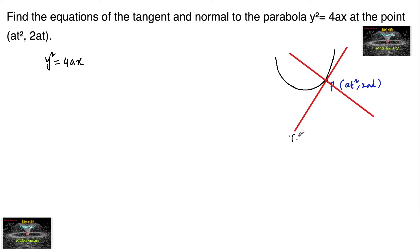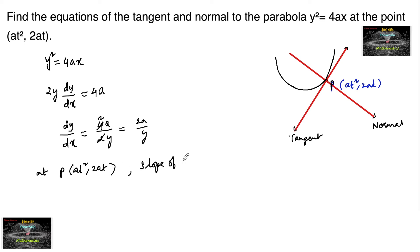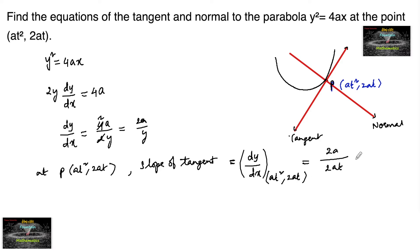Both tangent and normal are perpendicular to each other at point P. Now let's differentiate to find the slope of the tangent. We have 2y · dy/dx = 4a, so dy/dx = 4a / 2y = 2a / y. At the point P (at², 2at), we substitute the y-coordinate 2at, giving dy/dx = 2a / 2at.